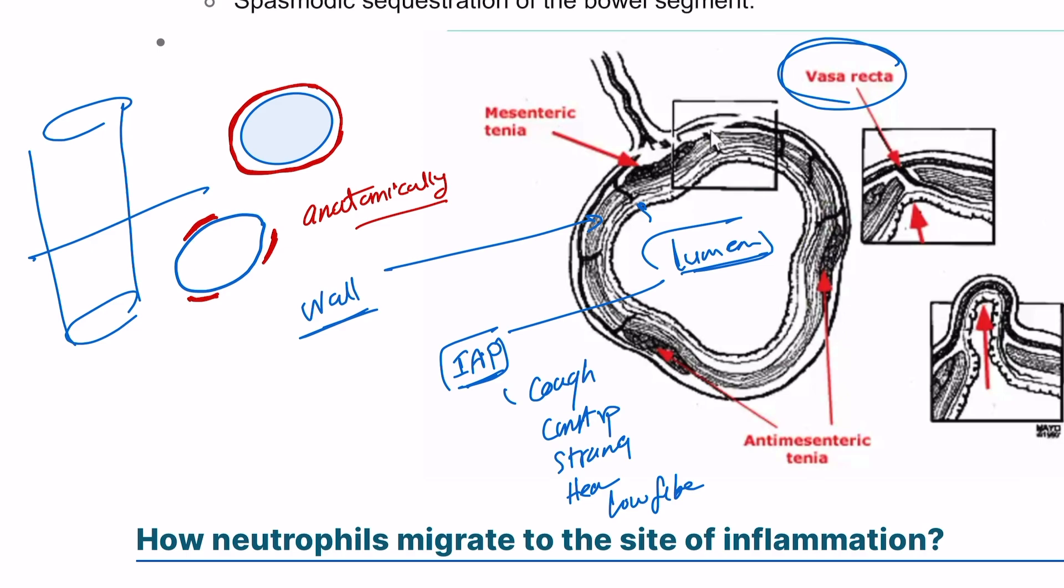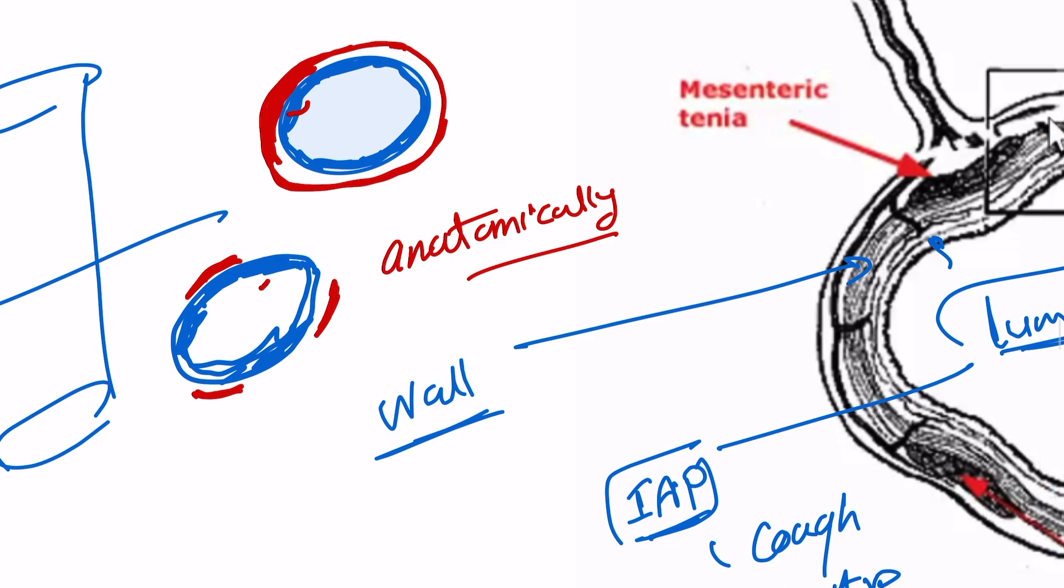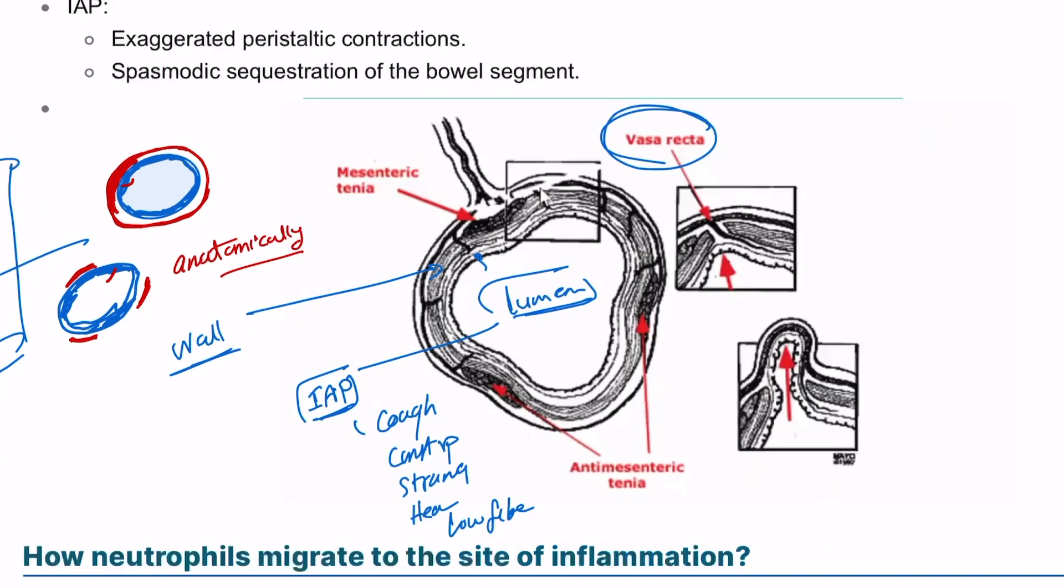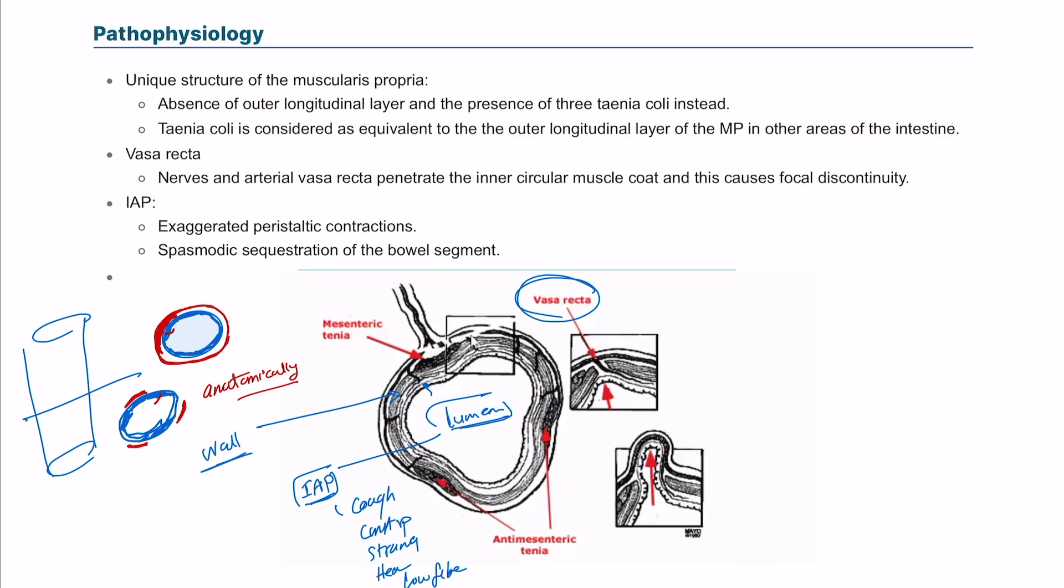The other thing is the vasa recta. If I'm going to make this wall a little bit thicker, the blood vessels and the nerves will come through the wall. In this layer, you have outer longitudinal layer protecting the outside, so it wouldn't make it weak at all. But if you have vasa recta coming out from here, it has nothing on the outside to protect the wall, so it will further make the wall very weak.